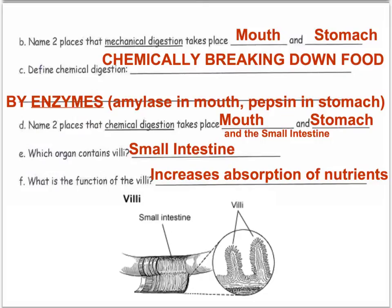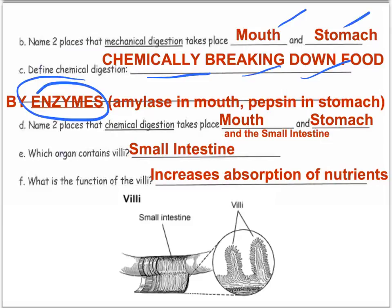Define mechanical digestion: physical breaking down — those are the key words — and it occurs in the mouth and the stomach. Chemical digestion is chemically breaking down. Notice the difference between physical and chemical is just the words chemical and physical. Key word: enzymes. Enzymes make things go faster; without enzymes, our body processes would take extremely long amounts of time — to the point where we'd be dead.